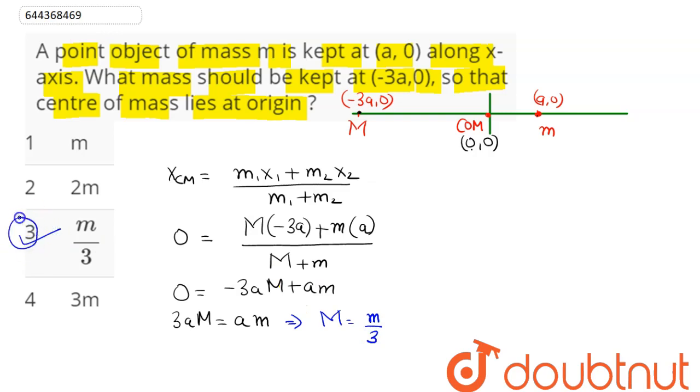So, m/3 means option number 3, that is, m/3 mass should be kept at (-3a,0), so that center of mass of the system lies at origin. Hence, option 3 is the correct answer. So, 3 is our answer.